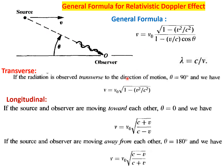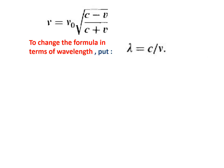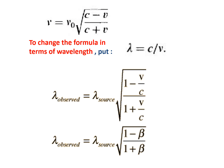When both source and observer are moving, we need to take care about the velocity v by using the relativistic velocity addition formula to find the combined relative velocity, and then use that value of v in the general formula.